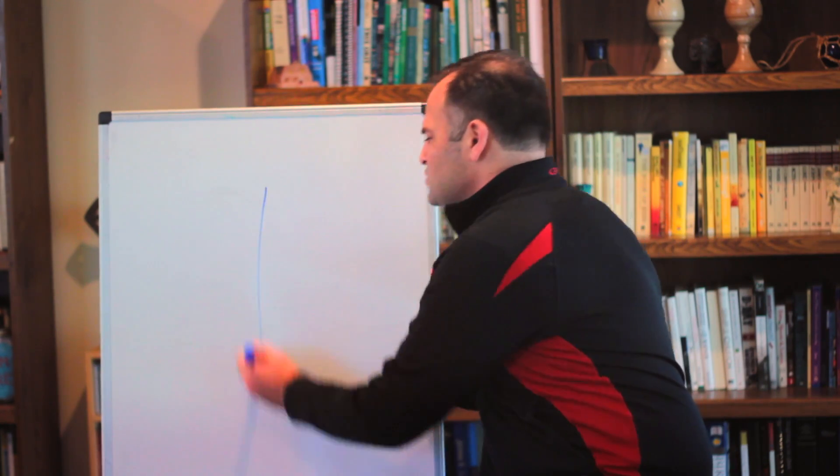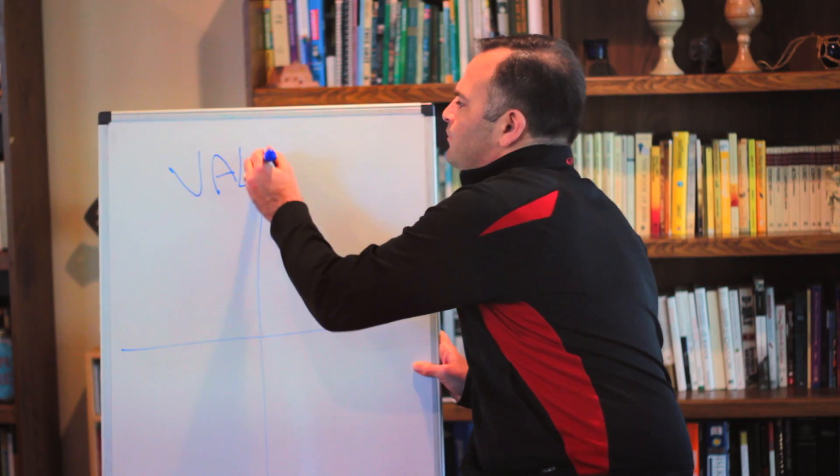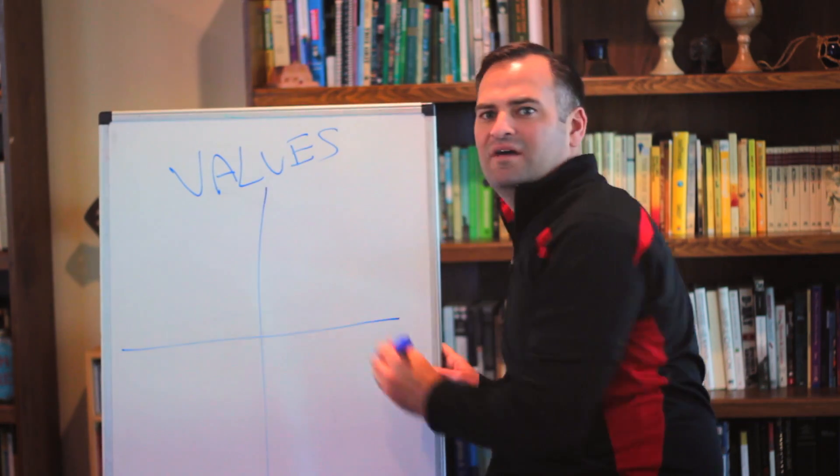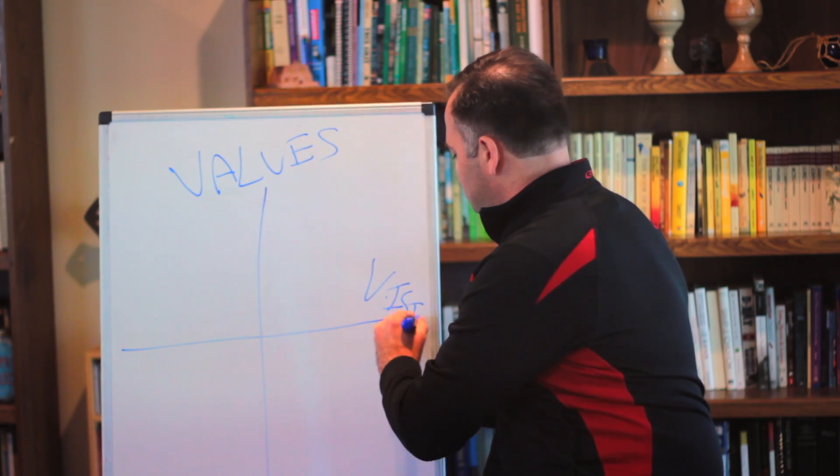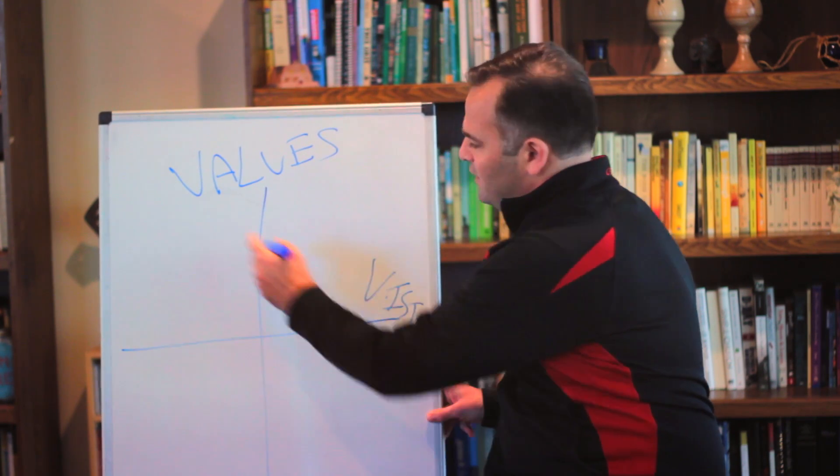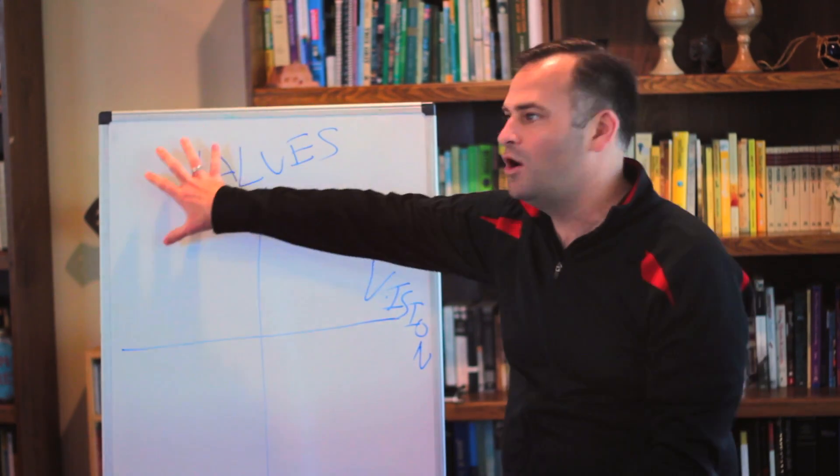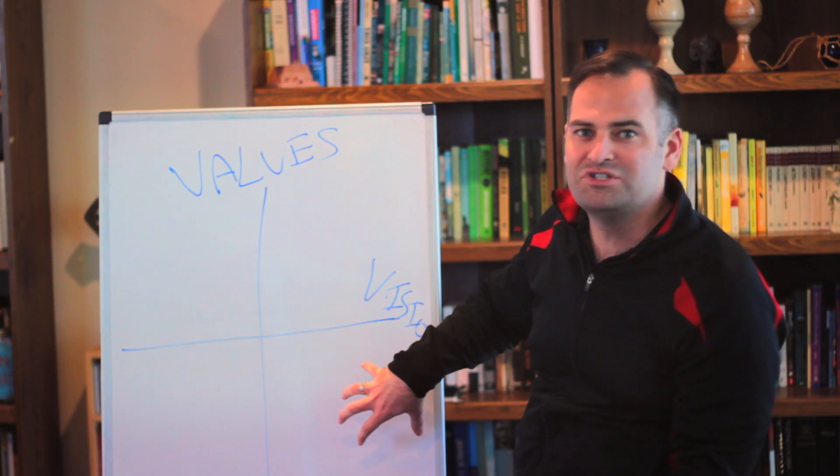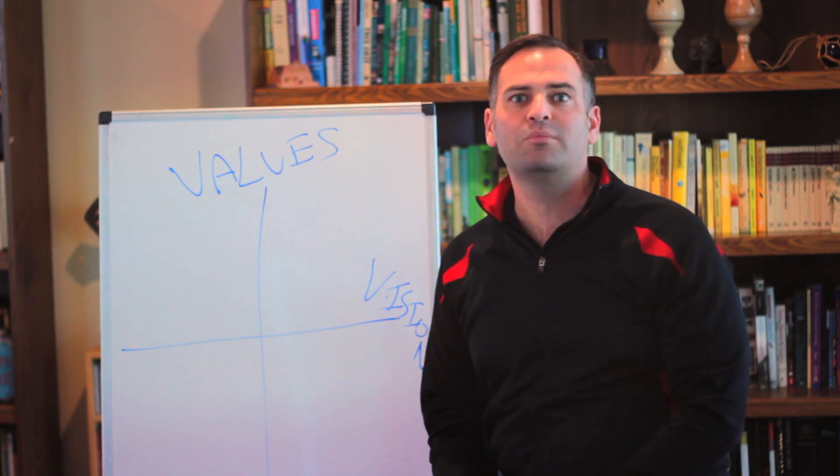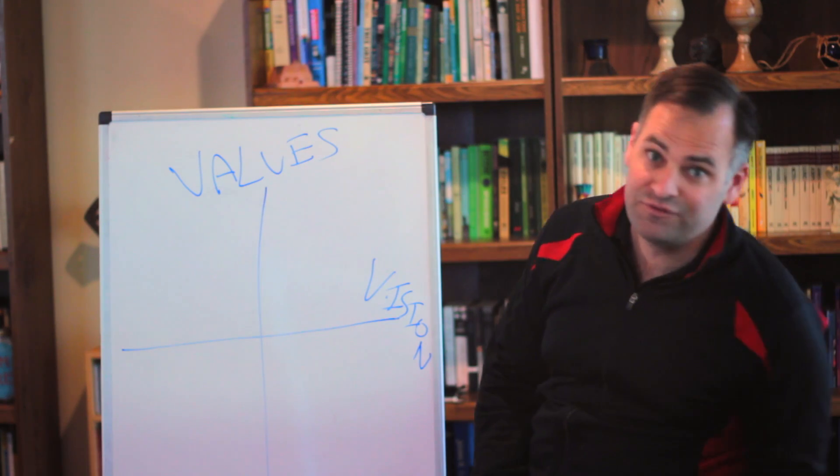So if I create an XY graph and I put values on the top and vision here on the horizontal, you'll see that it creates these four quadrants. High values, I know what my values are. Clear and compelling vision, I know what my vision is. I know what I'm called to do both personally and as a company. But you'll see that it creates these four quadrants.